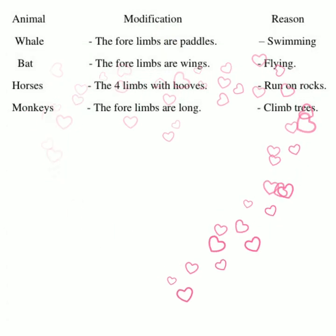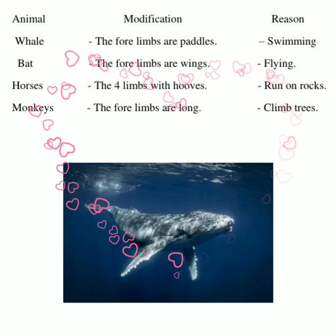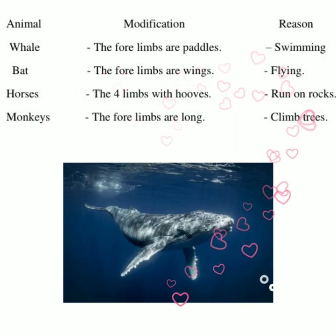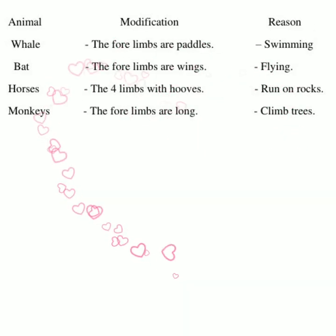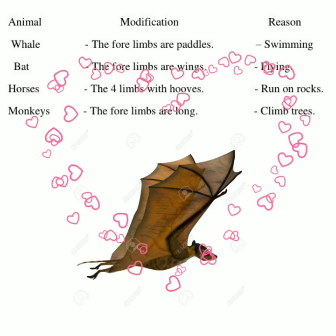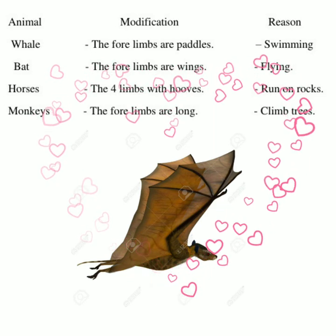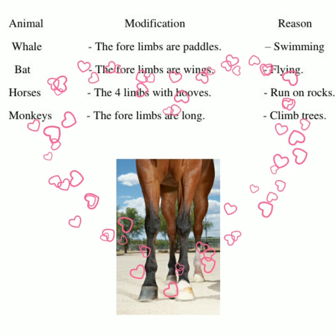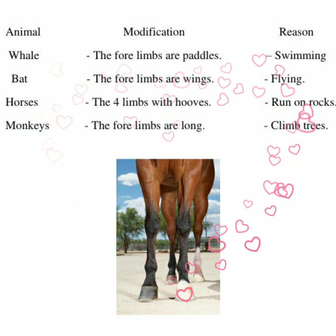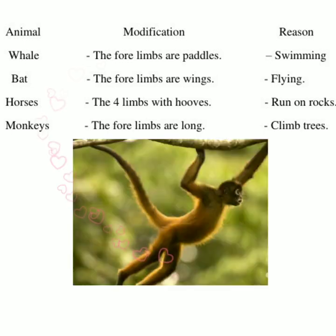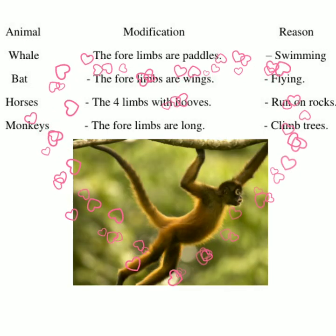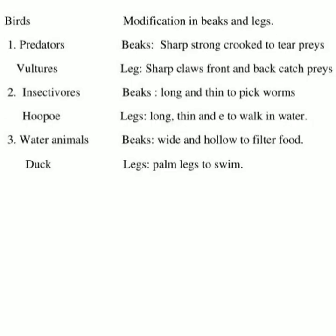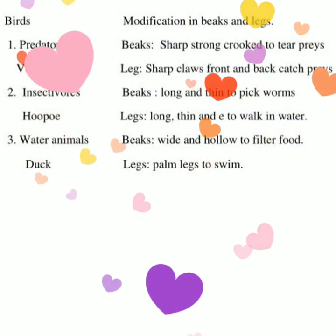First, adaptation for motion: the whale's four limbs are paddles for swimming; the bat's four limbs are wings for flying; the horse's four limbs are legs with hooves to run on rocky soil; and the monkey's four limbs are long to climb trees and catch food. Second, adaptation for food: we find changes in beaks and legs of some birds to get food.